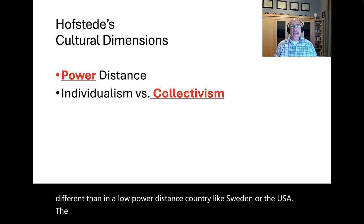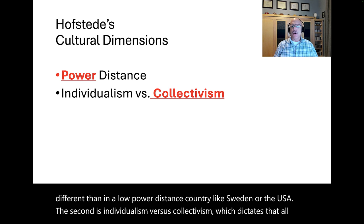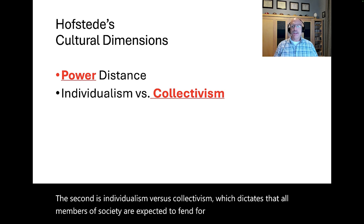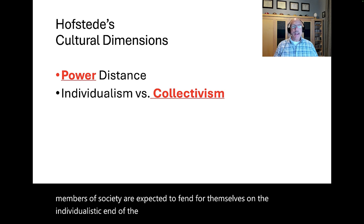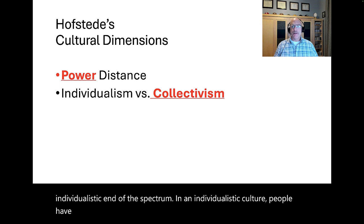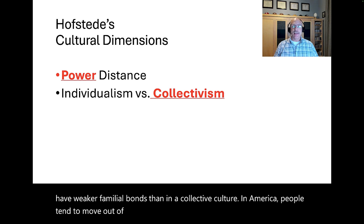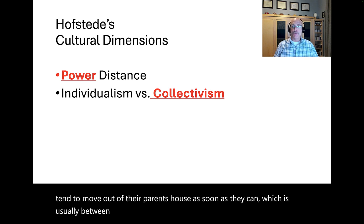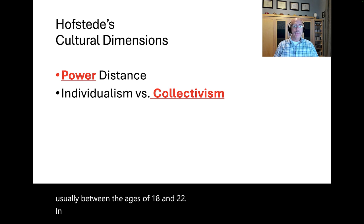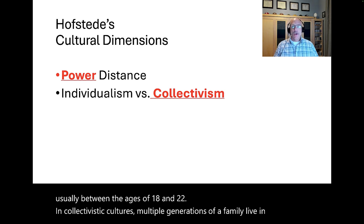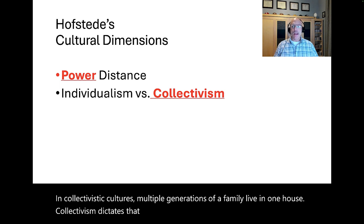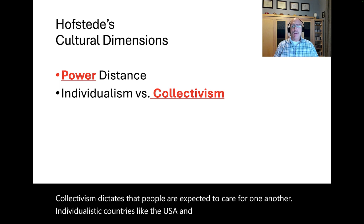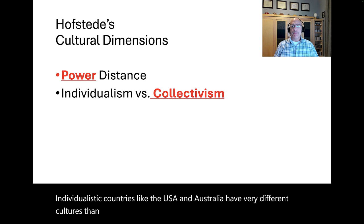The second cultural dimension is individualism versus collectivism, which dictates that in individualistic cultures all members of society are expected to fend for themselves. People in individualistic cultures have weaker familial bonds — in America, people tend to move out of their parents' house between ages 18 and 22. In collectivistic cultures, multiple generations of a family live in one house, and people are expected to care for one another. Individualistic countries like the USA and Australia have very different cultures than collectivistic countries like Pakistan and India.